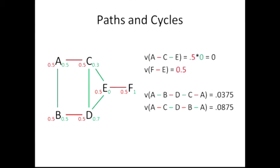The trick is we put values on these paths and cycles by picking up the posterior at the endpoint of each edge. For the path A to C to E: going from A to C along the red line we pick up 0.5, then from C to E along the green line we pick up 0 — giving a value of 0.5 × 0 = 0. For the path F to E along the red line, we pick up 0.5. For the full cycle, going A to B along green gives 0.5, B to D along red gives 0.5, D to C along green gives 0.3, C to A gives 0.5 — and we get 0.0375.